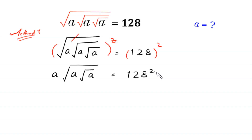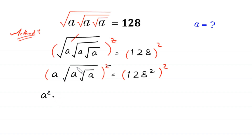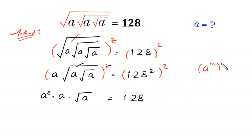Now from here we take the square of both sides again. This power 2 will become the power of this a — a squared — and this square will cancel out with this square root, leaving us with a squared times a times square root of a is equal to 128 to the power 4. By using the power rule (a^m)^n = a^(m·n), we multiply power 2 by power 2 to get power 4.